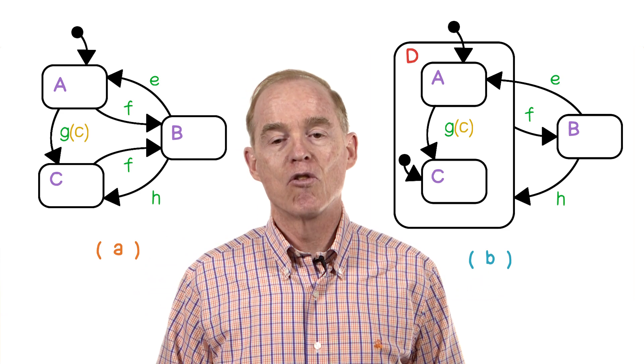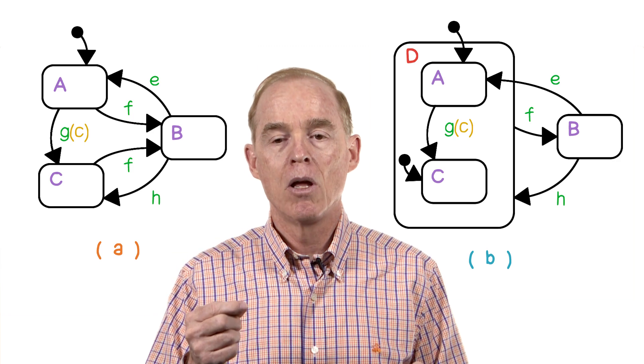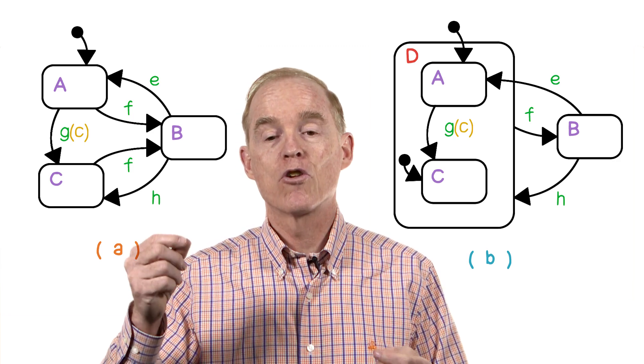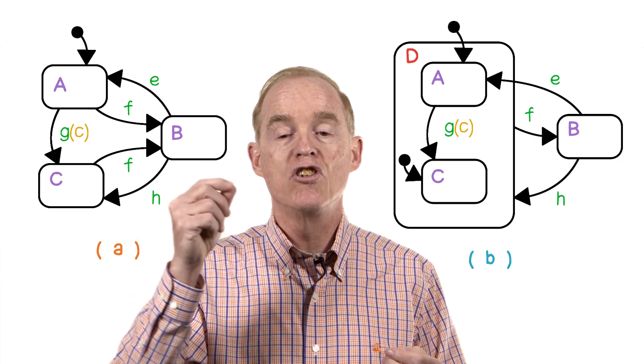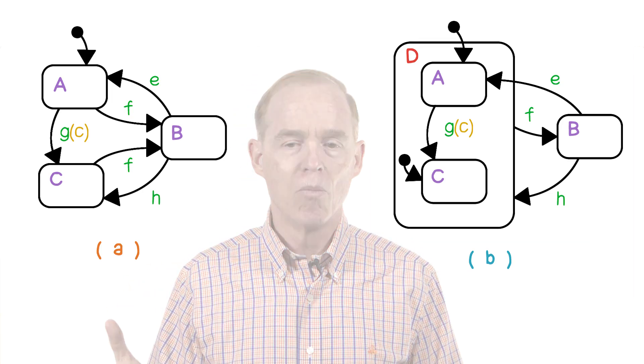There's still the transition from A to C. There's still the transition from B to A. Notice also though that there's a transition from B to D, labeled H. In this case, where does it go?